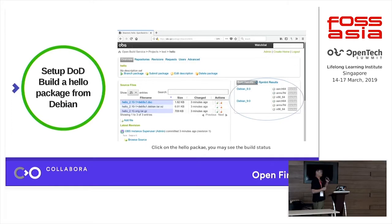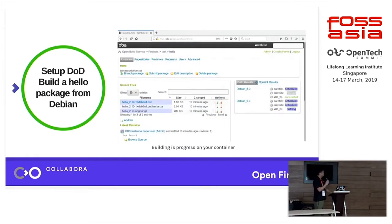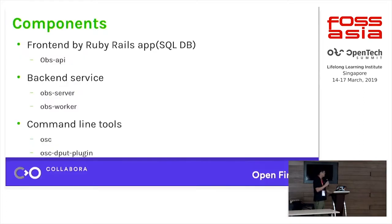Clicking on the hello package shows its build status. The hello package will be built against two different Debian distributions and two different architectures. Currently it shows 'blocked' because DoD is working — click on it and you can see DoD is going to download 151 packages to build the hello package. Meanwhile you can see the build in progress — one architecture is already done and shows success.